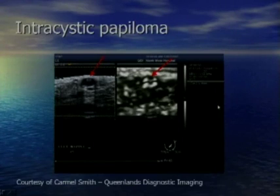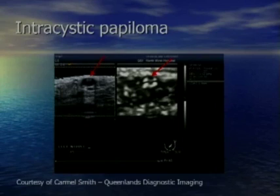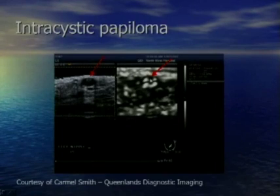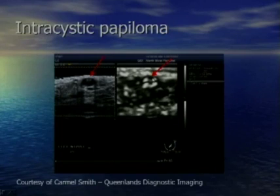We were concerned whether the bullseye artifact could hide a cystic neoplasm. This case — courtesy of Carmel Smith from Australia — shows the smallest solid component in a cyst I've seen: a 2 mm intraductal benign papilloma. The solid component, the papilloma, appears smaller on the elastogram, but you can clearly see that solid component within the cyst artifact. We've seen many such cases and feel very confident that if there is a solid component in a cyst, it will show up as a hard area within the bullseye artifact.